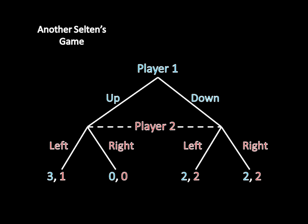So here player one moves up or down. And then player two moves left or right. And the game ends. So all this dashed line here means is that player two does not know what player one did when she makes her move.